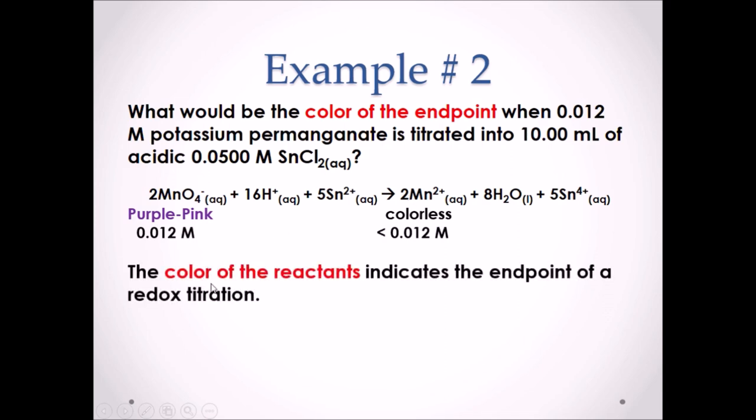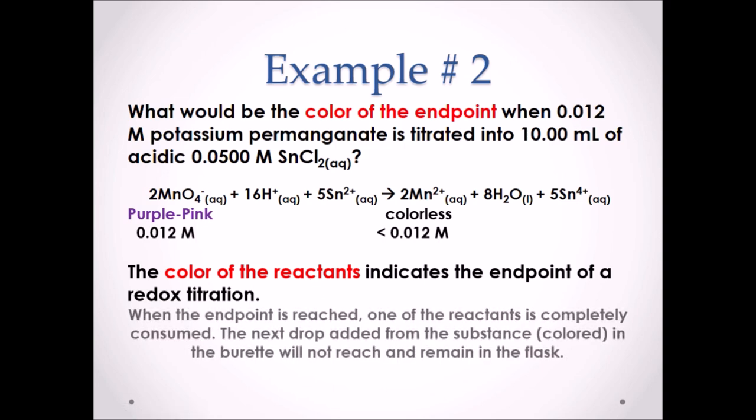The color of the reactants always dictates the endpoint of a redox titration. When the endpoint is reached, one of the reactants is completely consumed. In this instance, that would be tin 2+ ions. Therefore, the next drop added from the substance in the burette will not react and remain in the flask. That would be the next drop of permanganate ions, which would result in a purple endpoint of the redox titration.